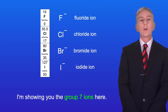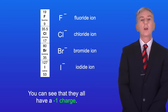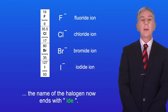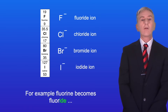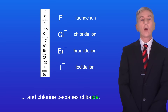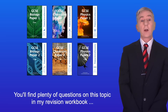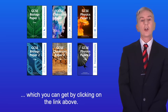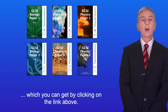I'm showing you the Group 7 ions here and you can see that they all have a negative one charge. When halogens form ions like this, the name of the halogen now ends with -ide. So for example fluorine becomes fluoride and chlorine becomes chloride. You'll find plenty of questions on this topic in my revision workbook, which you can get by clicking on the link above.